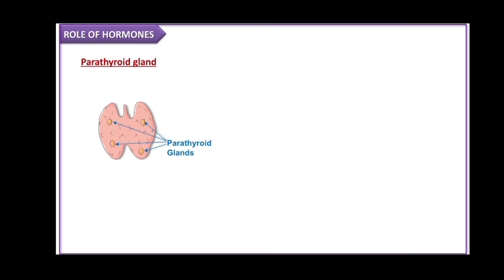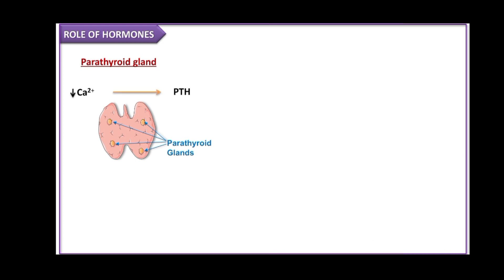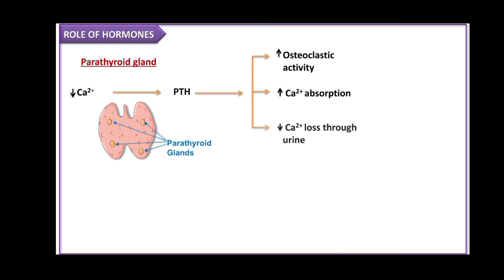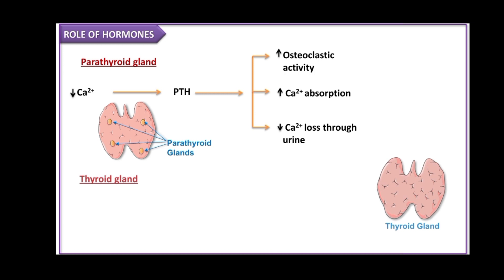Hormones play an important role in bone metabolism or remodeling. First, regarding the parathyroid gland: when there is a decreased serum calcium level, the parathyroid gland creates parathyroid hormone, which increases osteoclastic activity, increases calcium absorption in the GIT, and reduces calcium loss through urine — all of which increase serum calcium.